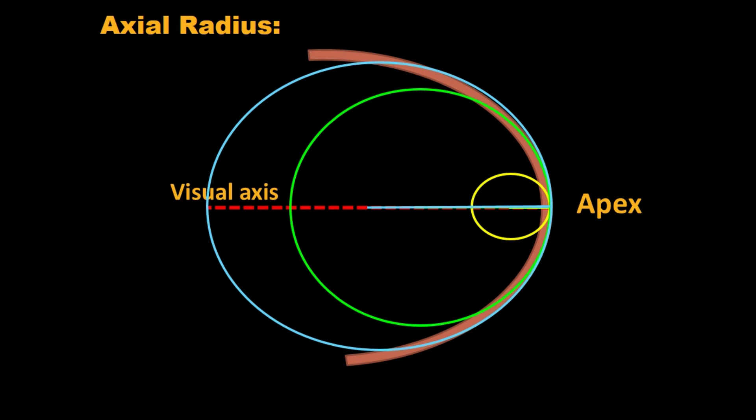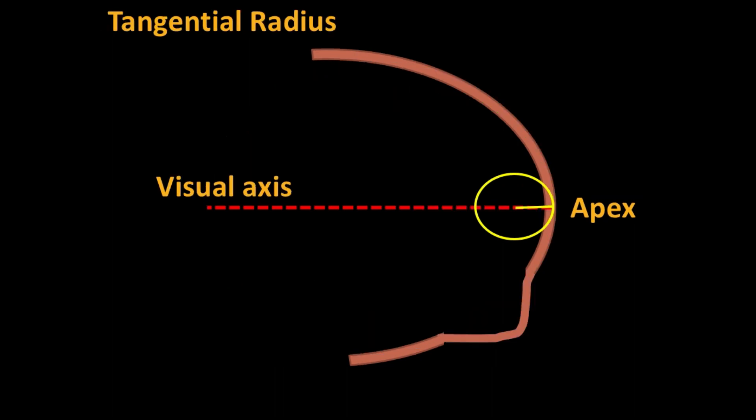Local or tangential radius calculates the curvature at each point with respect to its neighboring point by fitting the best-fit sphere. It does not refer to the optical axis, so there is less spherical bias.